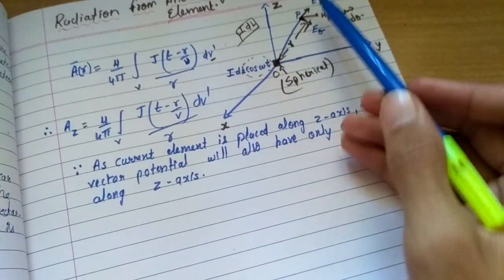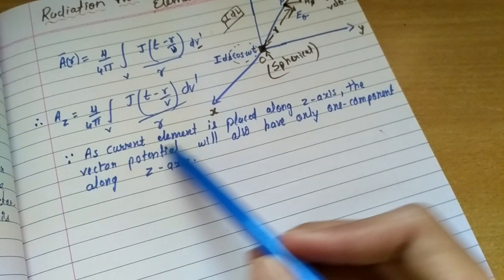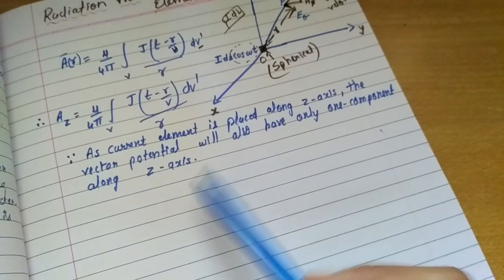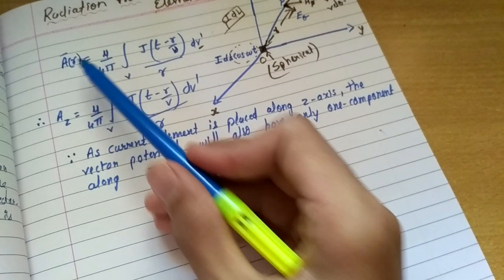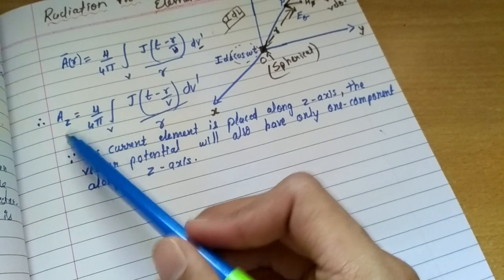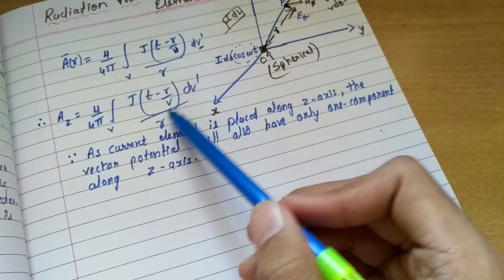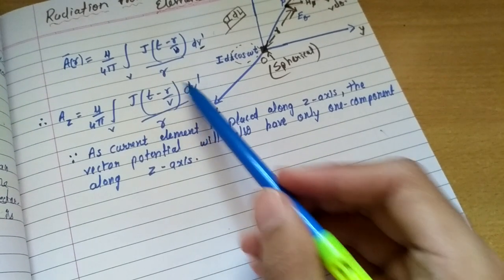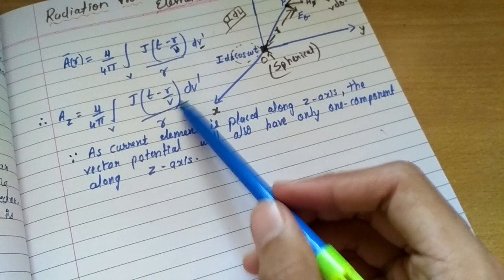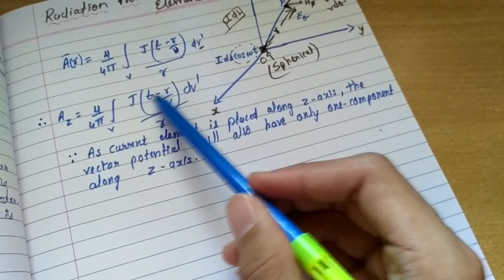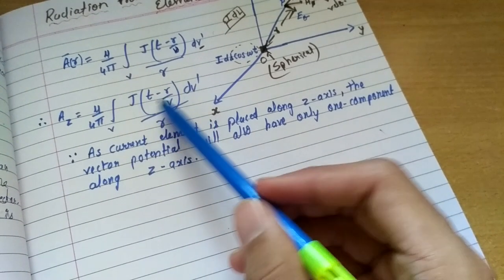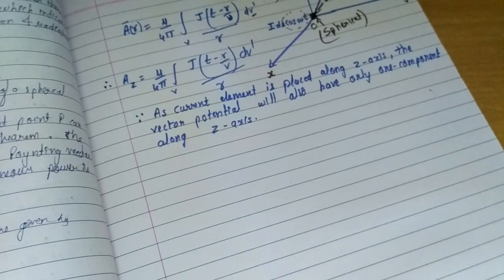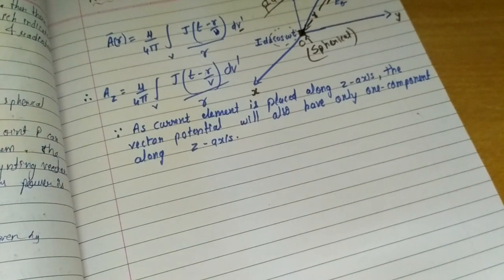Since only the z-component is present — because the current element is placed along the z-axis — the vector potential will also have only one component along the z-axis. So specifically, Az = μ₀/4π times the integral of J(t − R/v) dV'. The term R/v has dimensions of time only, since R is distance and v is velocity, so distance divided by velocity is time. This is the retarded potential, retarded by that time amount. So Az also has a component only along the z-axis.